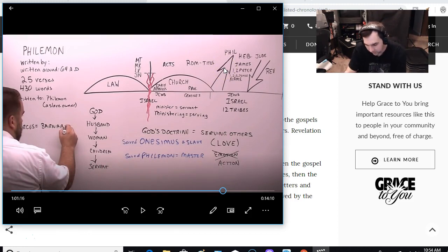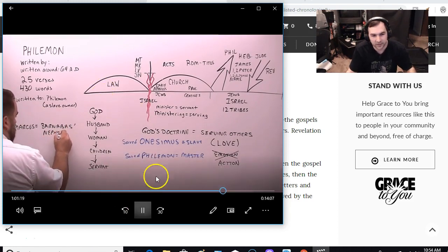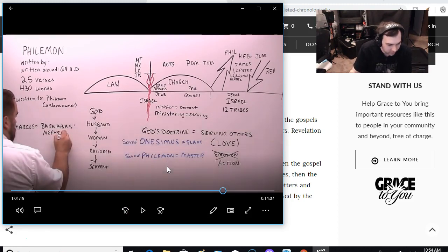So, about 16 minutes into the video, he says 1 Timothy 6:2 is discussing slavery. He says that Philemon has all to do with slavery, and that's what he spends a lot of this video talking about. He goes to 1 Timothy, chapter 6, verse 2.